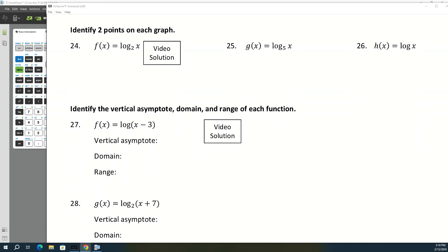Alright, so on 24 through 25, you are going to identify two points on each graph. And this will always work as long as there's not transformations going on. So it's just kind of like a parent function.